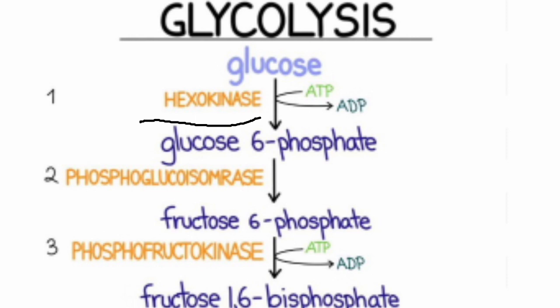Step 2: glucose-6-phosphate is isomerized to form fructose-6-phosphate, catalyzed by the enzyme phosphohexose isomerase, also called phosphoglucoisomerase. Step 3: phosphofructokinase-1, also called PFK1, catalyzes the transfer of a phosphoryl group from ATP to fructose-6-phosphate to yield fructose-1,6-bisphosphate. The reaction is irreversible under cellular conditions, and ATP is utilized.